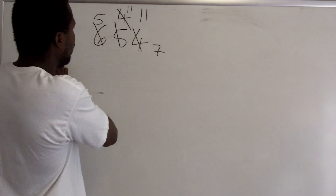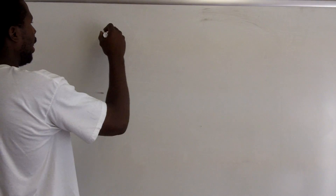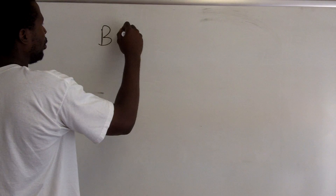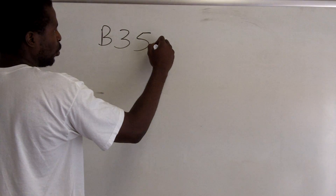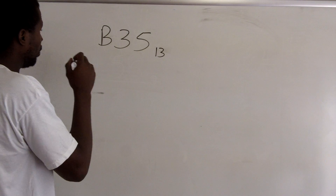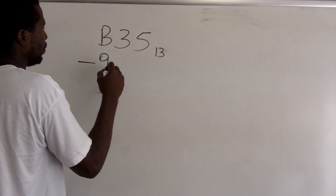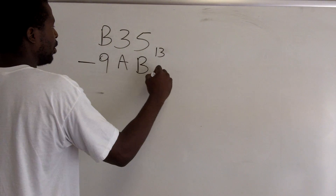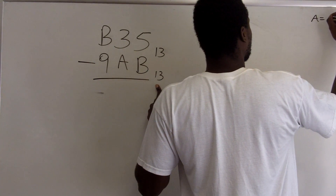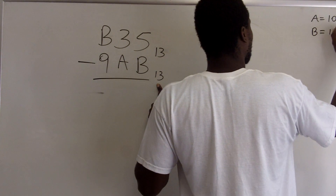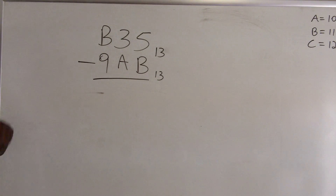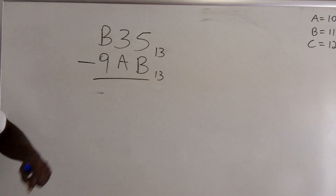Let's do one last example. We'll do B35 base 13 minus 9AB base 13. Since it's base 13, I use A to represent 10, B to represent 11, and C to represent 12. Those are all the letters needed, since we only need numerals up to 12 in a base 13 system.